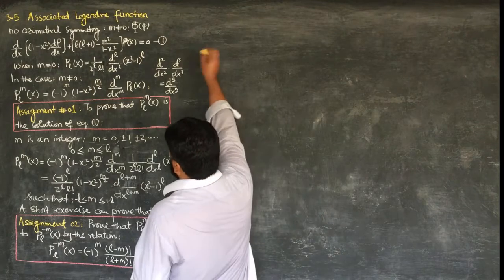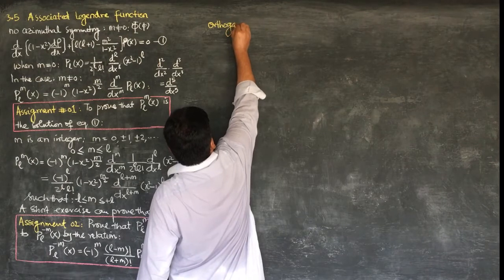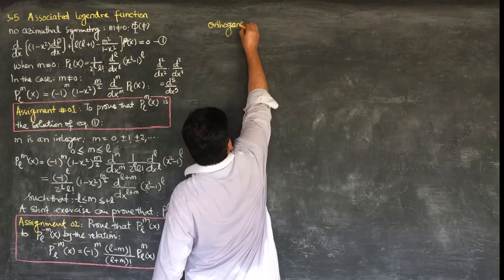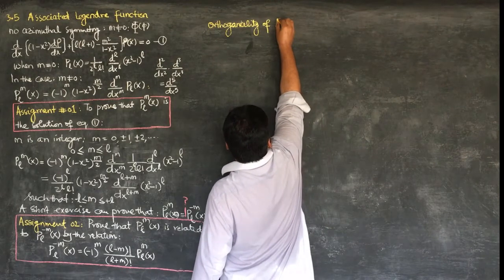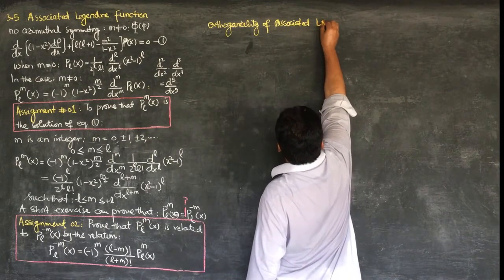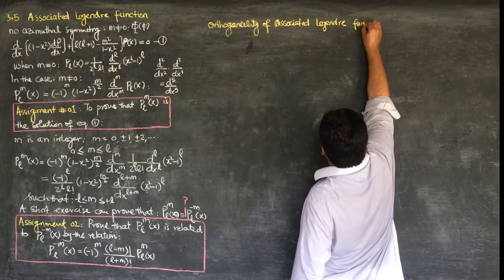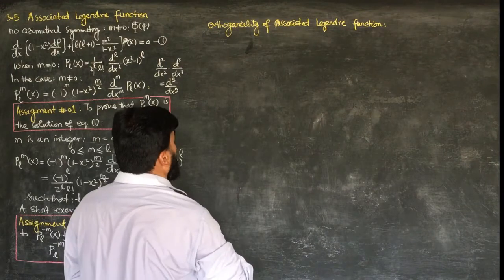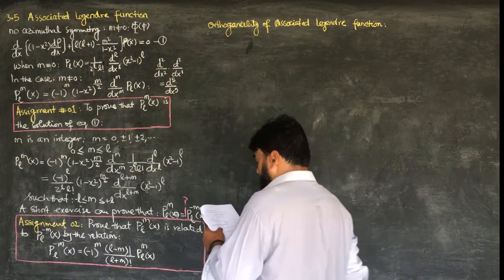Now we discuss the orthogonality of associated Legendre functions. If we consider two associated Legendre functions, they are to be orthogonal to each other.